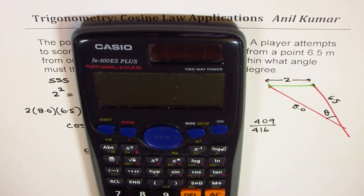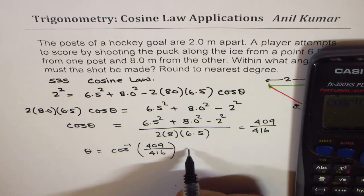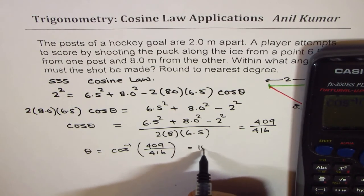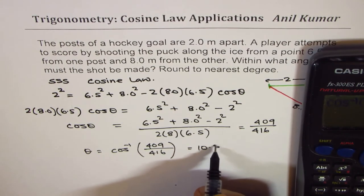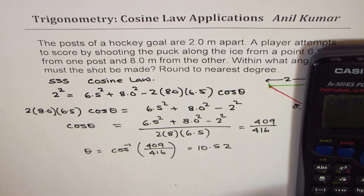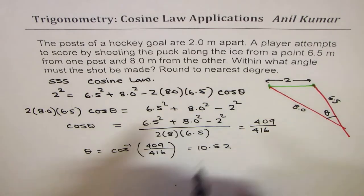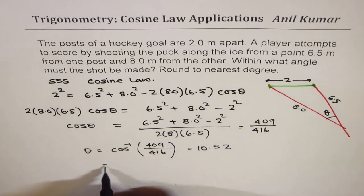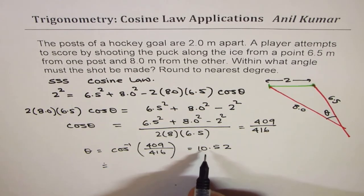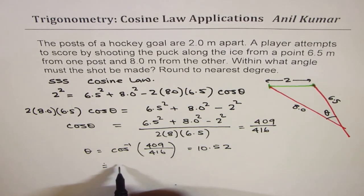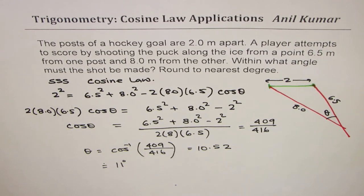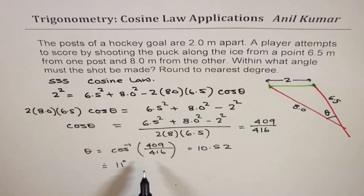That is equal to 10.52 degrees. We have to round to the nearest degree, so we write 10.52 as 11 degrees. So, 11 degrees is the answer for the given case.